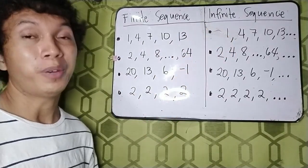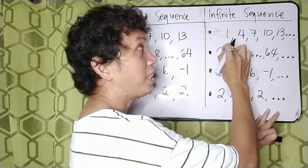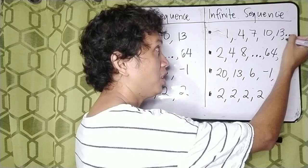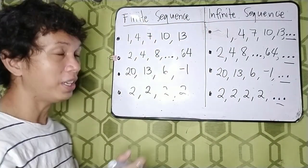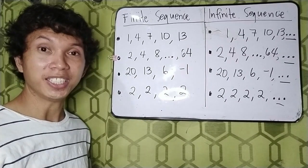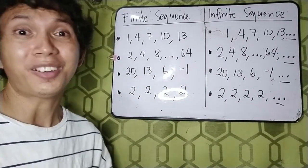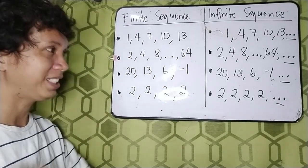So in infinite sequence, as you can see, at the last part of each sequence, there are these three dots. Right? While in the finite sequence, there is none. Have you seen that? Is that also your guess or your answer? I think so. You have seen that.